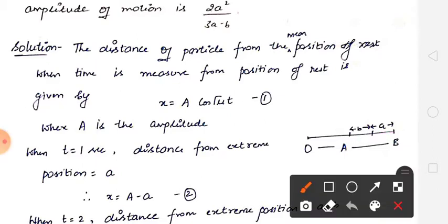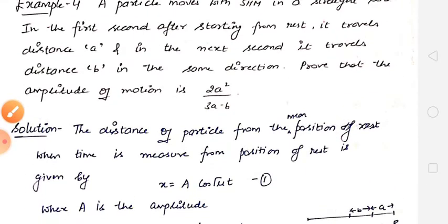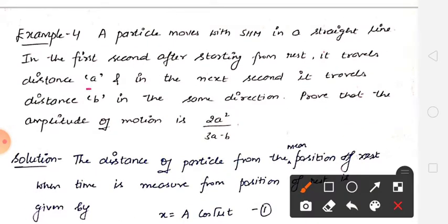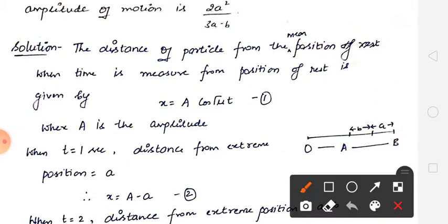Amplitude हमने capital A assume कर लिया है — small a हम generally use करते हैं, बट small a यहाँ statement में given है। तो हमने amplitude को capital A से denote कर लिया। This length is capital A — ये amplitude हो गया। ये mean position है, ये position of rest है। यहाँ से particle ने चलना start किया, first second में उसने A distance cover किया, next second में उसने B distance cover किया। ये हमें given है।